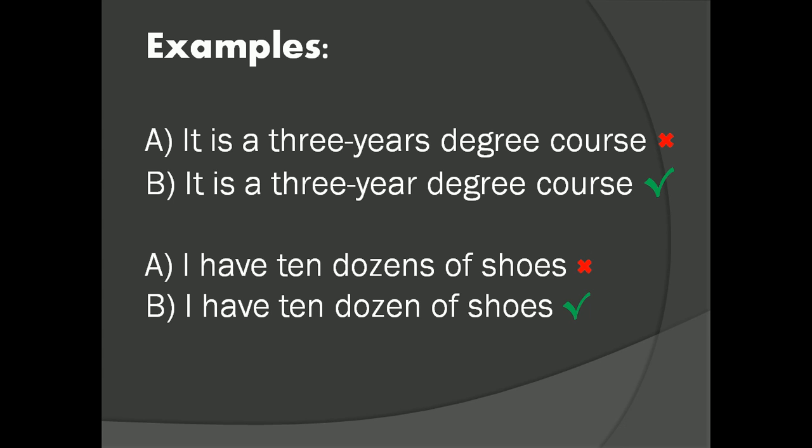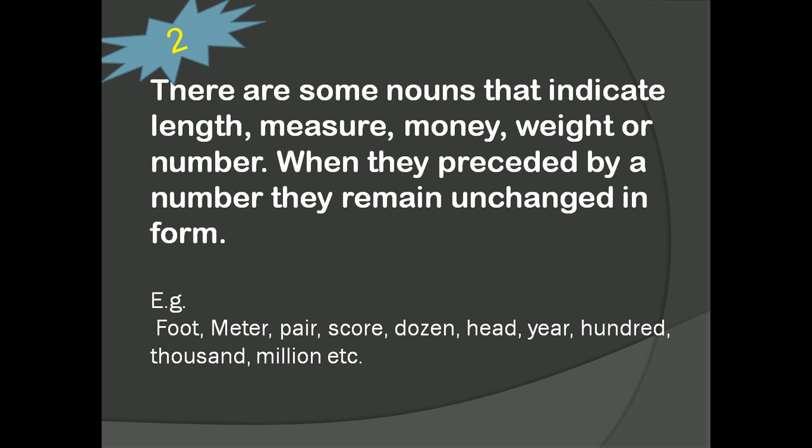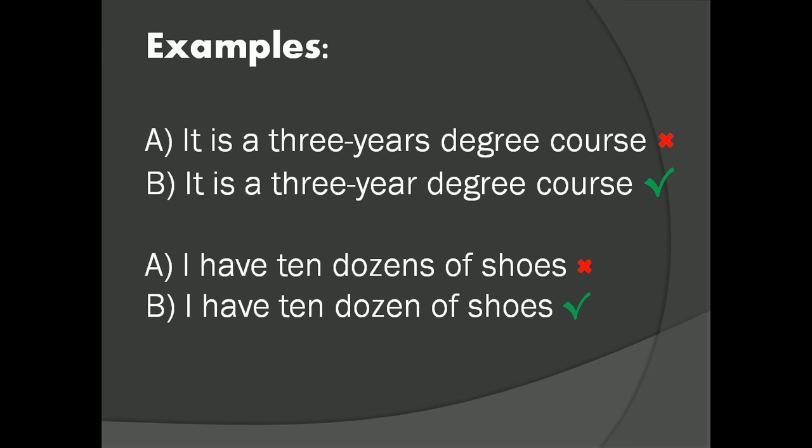Let us see the second trick. There are some nouns that indicate length, measure, money, weight or number. For example, foot, meter, pair, score, dozen, head, year, hundred, etc. When they are preceded by a number, they remain unchanged in the form. Please do remember, when they are preceded by a number, they remain unchanged in the form.